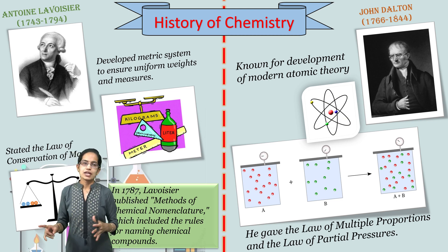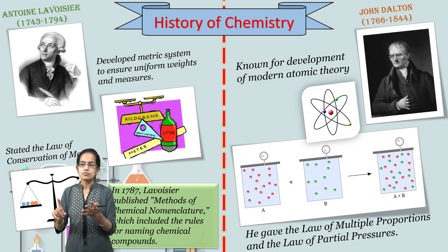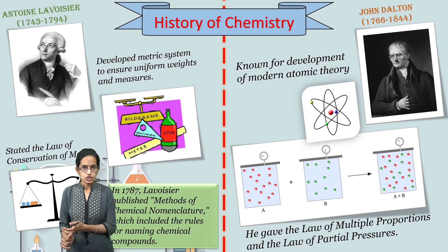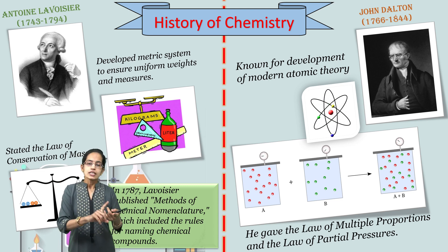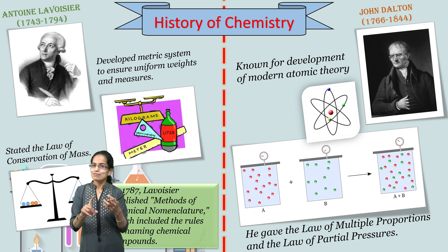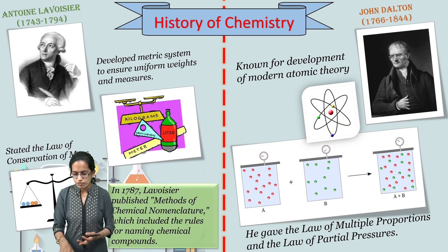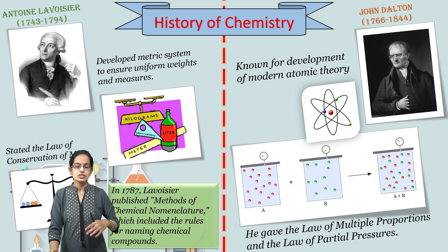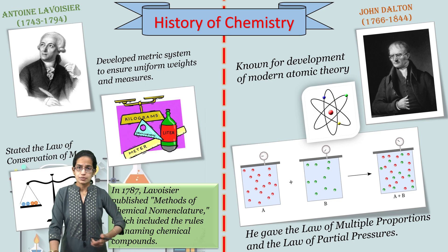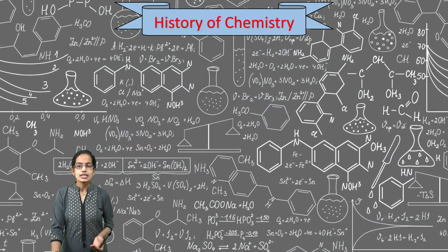To recap: Lavoisier focused on metric systems, weights and measures, and the law of conservation of mass. Dalton focused on atomic theory, the law of multiple proportions, and the law of partial pressures, which we would cover in a separate lecture.